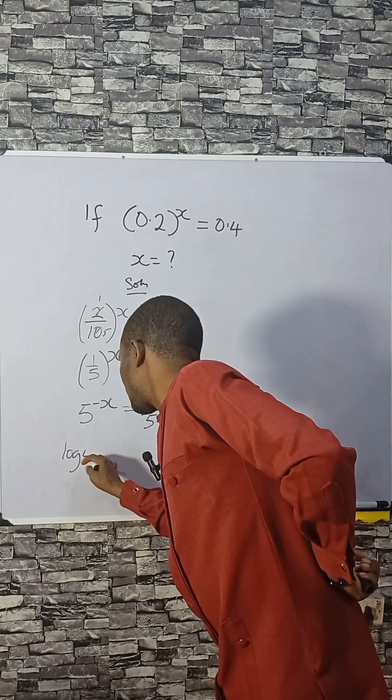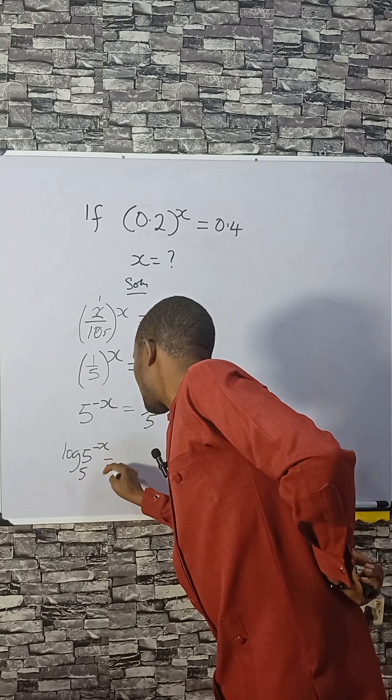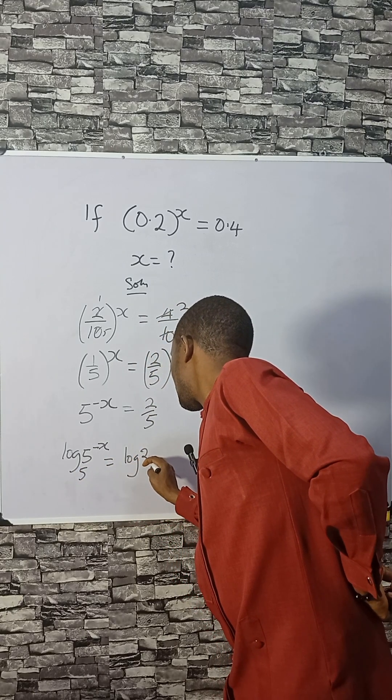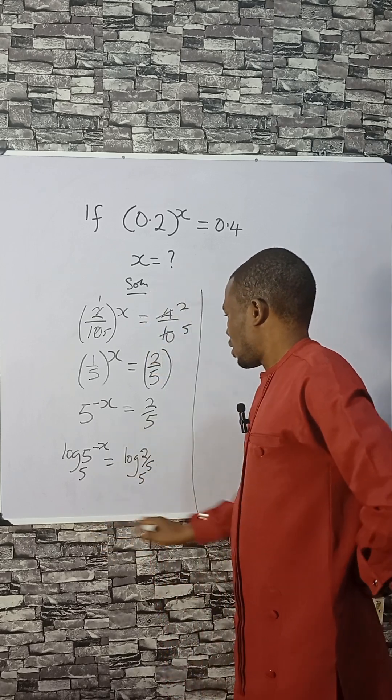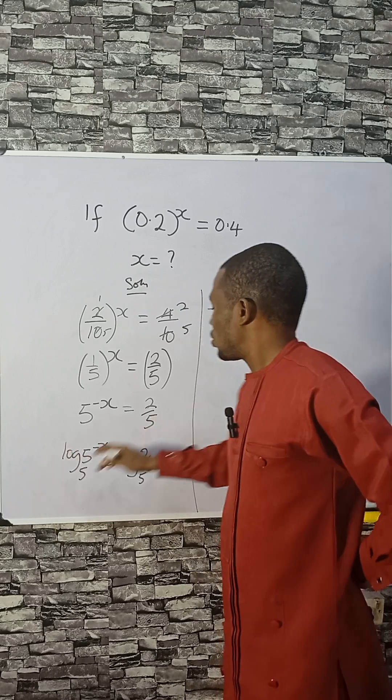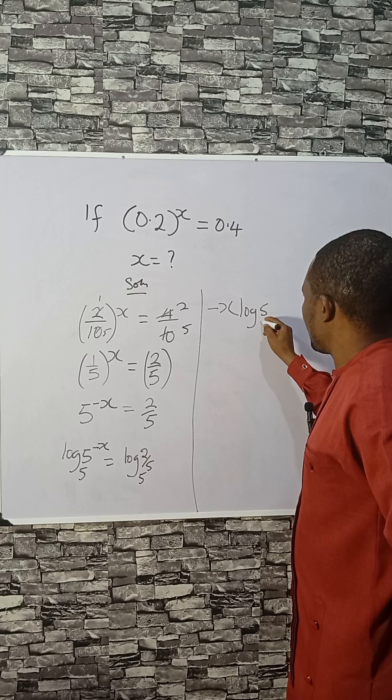That will be log 5 raised to the power minus x, base 5, equals log 2 divided by 5, base 5. If that happens, minus x will go to the back of this log. That will give us minus x times log 5 base 5.